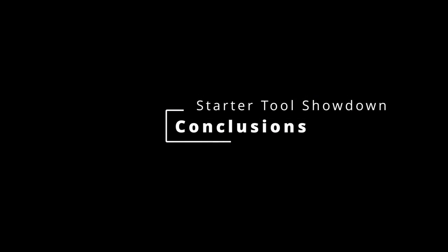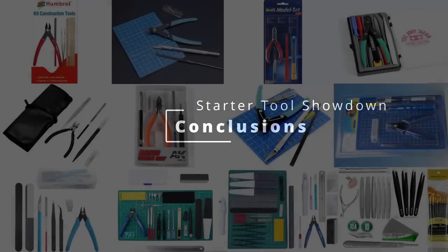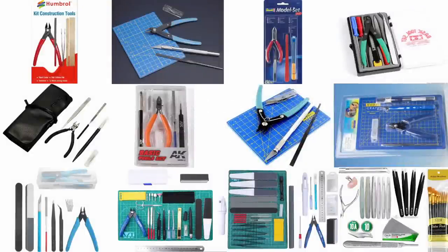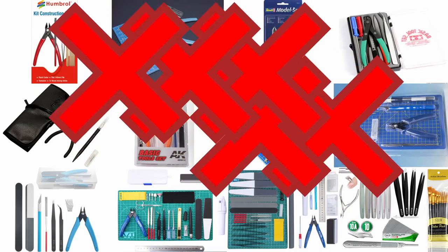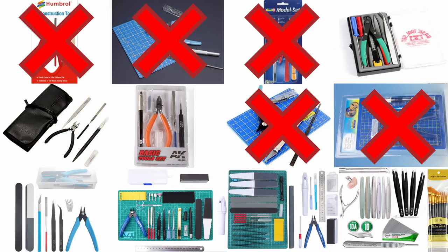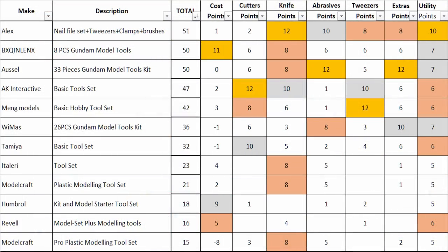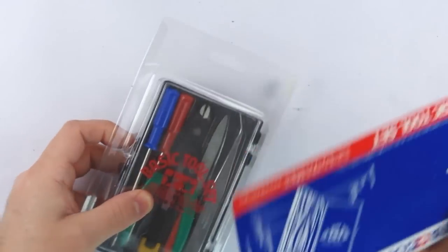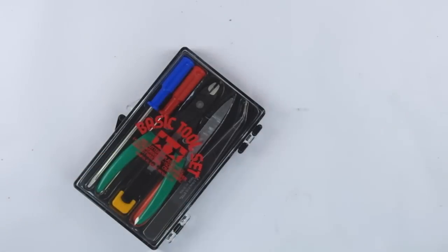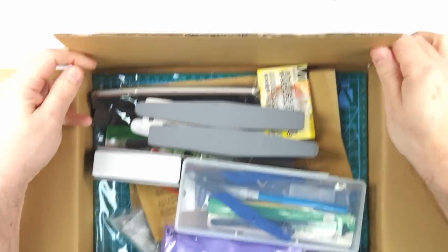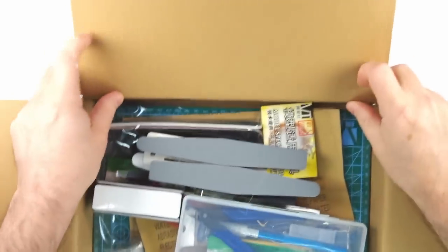So what can we conclude from this head-to-head of starter tool sets? Well I think there are two main takeaways. The first is that it's easy to see what not to buy. Humbrol, Revell and Italeri were utterly destroyed in this test, as were the two sets from Modelcraft, none of them achieving half of the points of even the fourth placed set. Of the main manufacturers, Tamiya put in a passable performance, but one equaled by a random set of tools from an unknown manufacturer on Amazon.